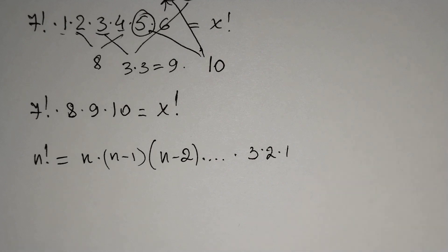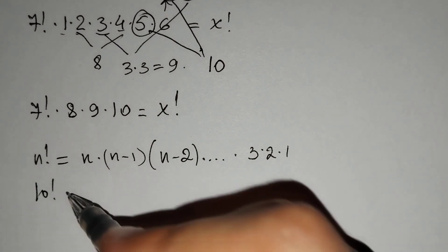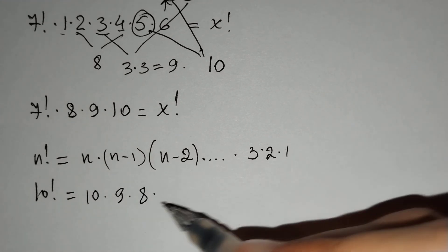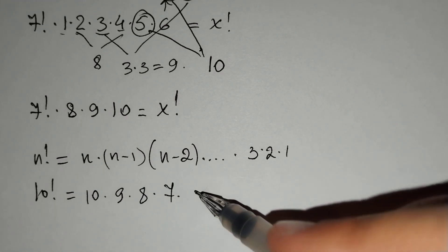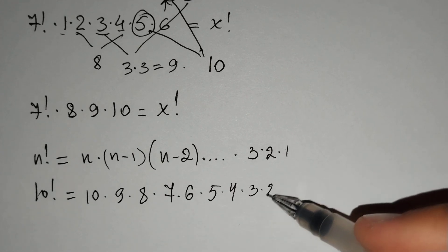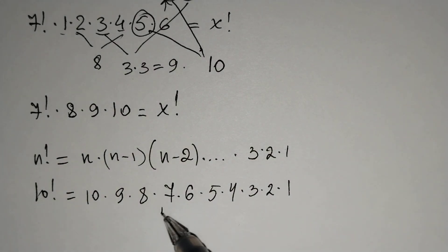And here, 10 factorial equals 10 times 9 times 8 times 7 times 6 times 5 times 4 times 3 times 2 times 1. And you can see here that this is equal to 7 factorial.